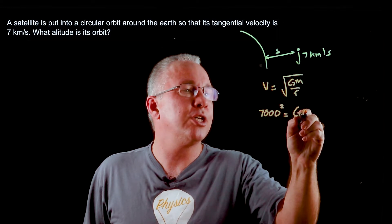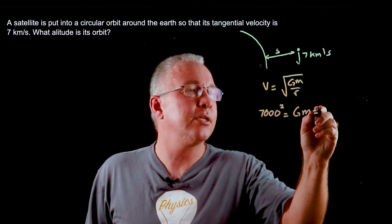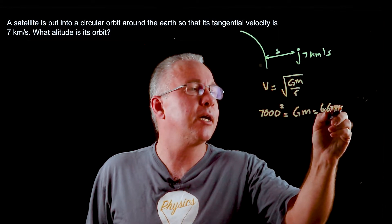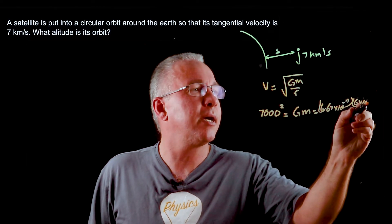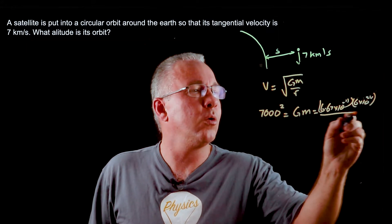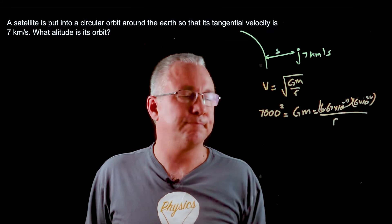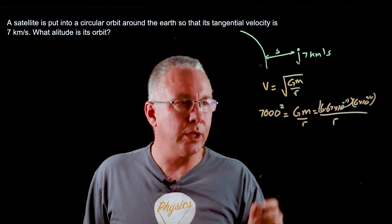That means I get GM which we know is equal to 6.67 by 10 to the power of negative 11 multiplied by the mass. In this case it's the earth so it's 6 by 10 to the power of 24 all over r. And that's the thing we're looking for.